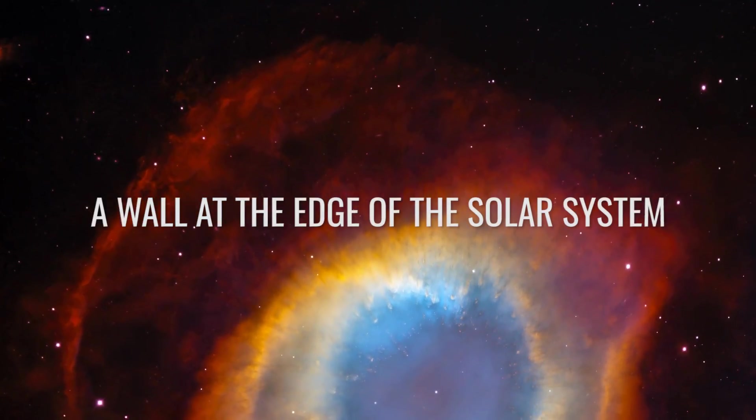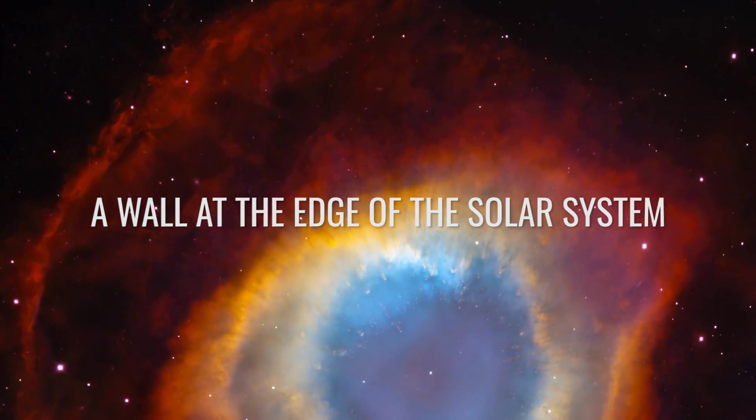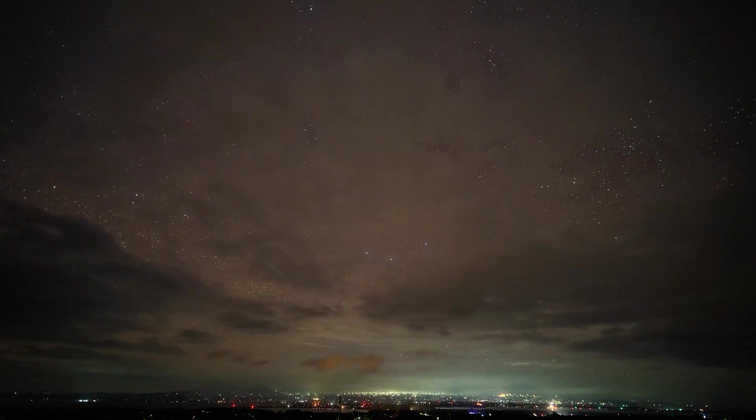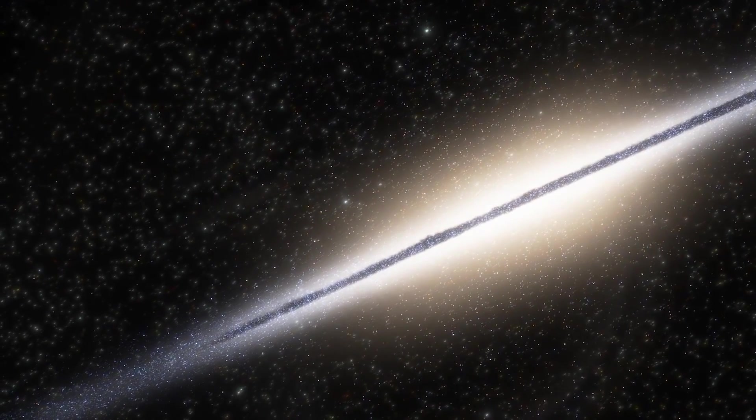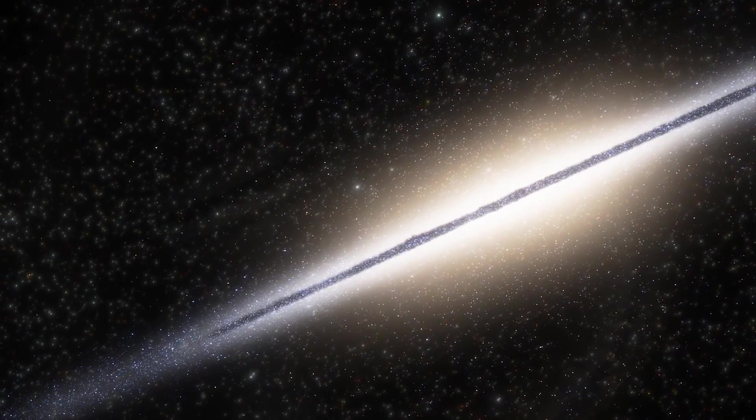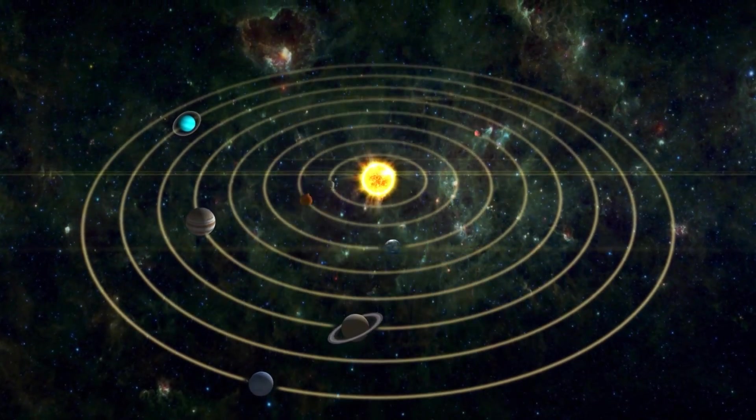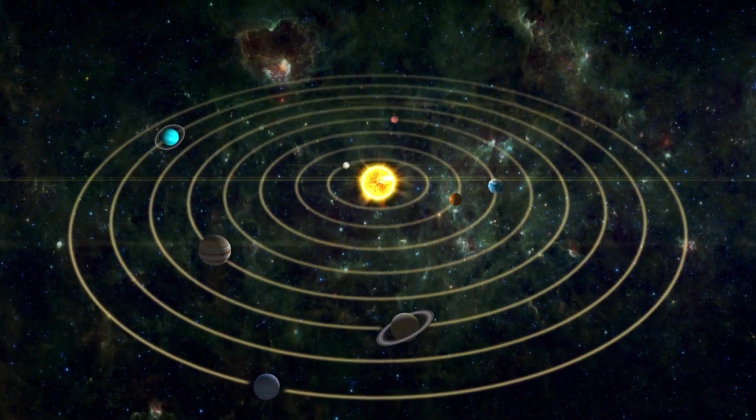A wall at the edge of the solar system. Would you have believed that the almost infinite universe seems to be crisscrossed by walls? While the South Pole Wall is 500 million light-years away from the Earth, and therefore probably can never be traveled by humans, another wall is located directly at the edge of our solar system.